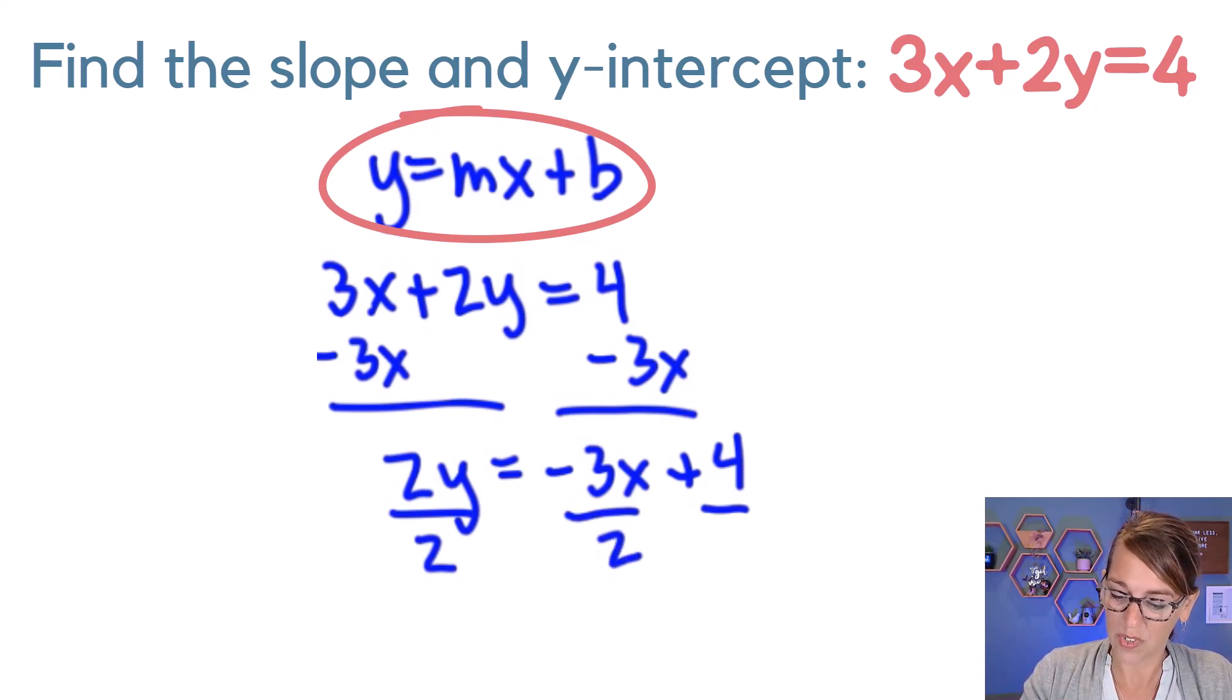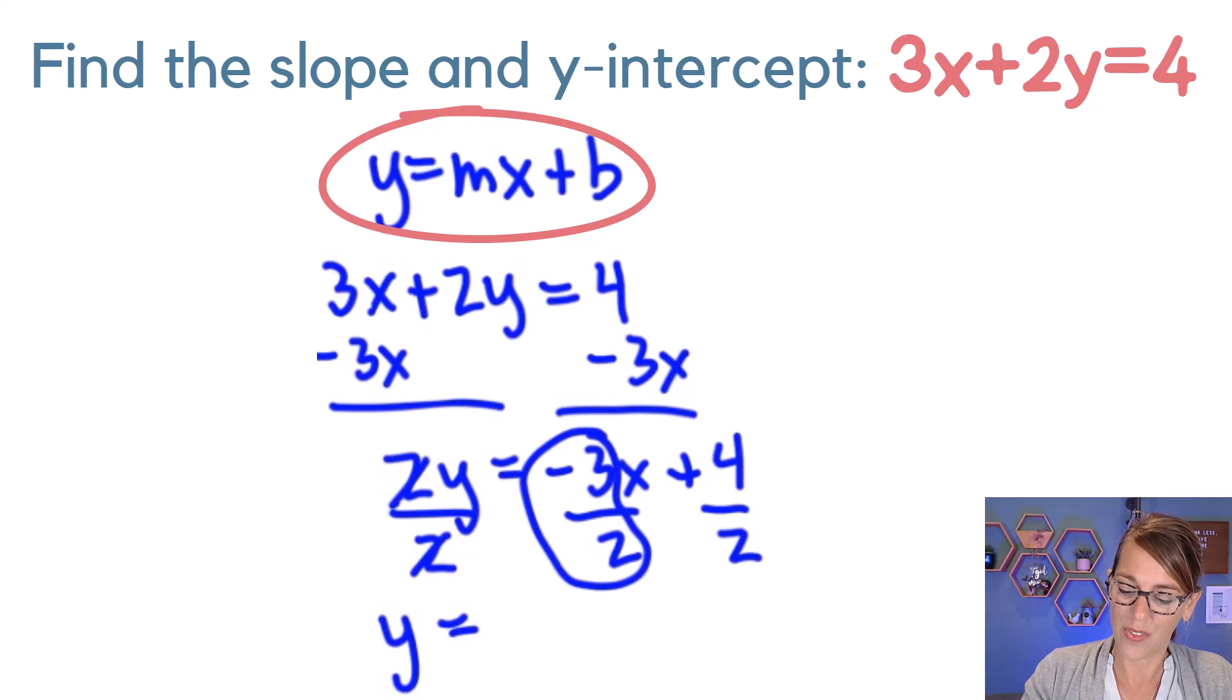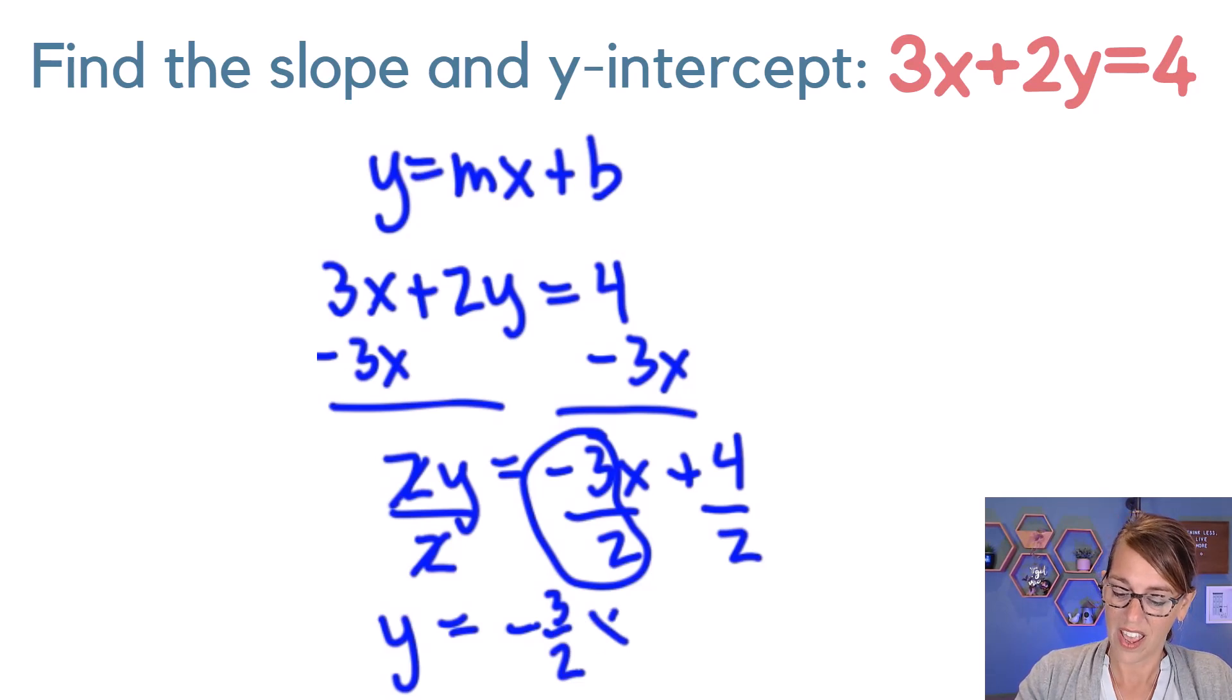I end up with y, because my 2s cancel, equals negative 3 over 2. Let's write that as our m, our slope out in front. x plus 4 divided by 2. 4 divided by 2 equals 2.